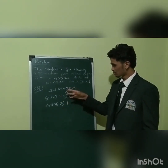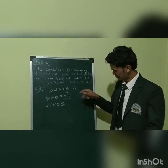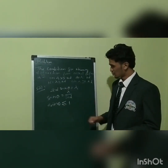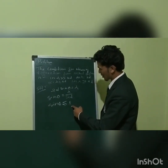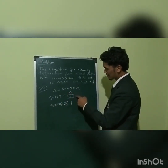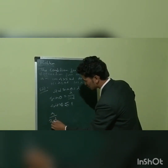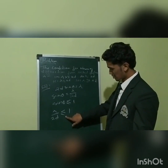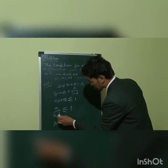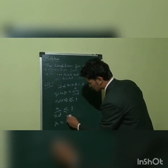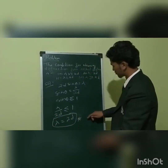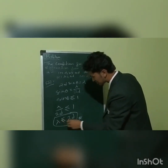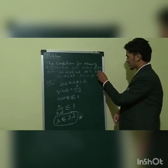From Bragg's law, sin theta equals lambda divided by 2D. Since sin theta must be less than or equal to 1, we have lambda divided by 2D less than or equal to 1. By cross multiplication, lambda is less than or equal to 2D. Therefore, option B is the correct answer.